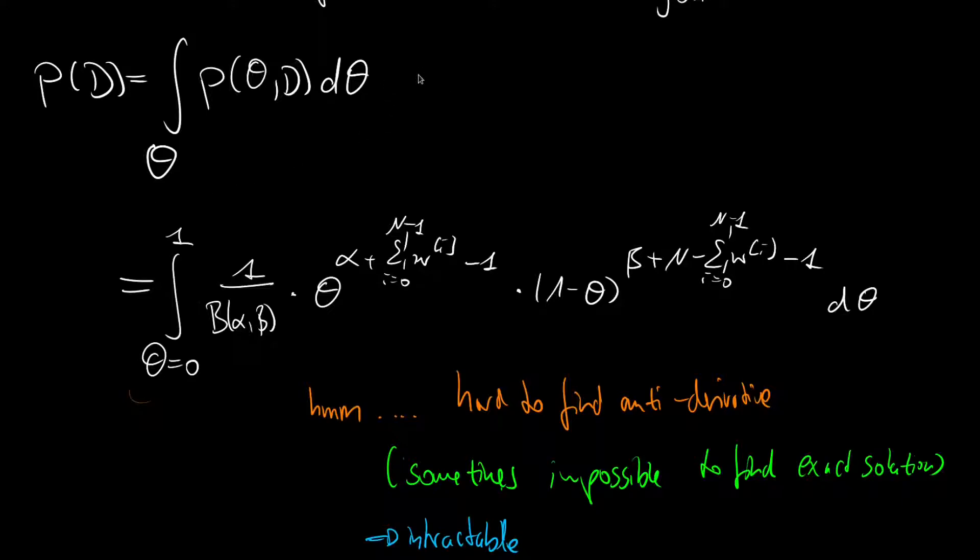This is nothing else, let's put this in brackets, this is nothing else as the integral over, factorizing the joint, P of theta times P of D given theta, d theta. And since theta is a continuous random variable, what you see here is nothing else than the expectation over theta distributed according to P of theta over the likelihood. And the likelihood was P of D given theta.